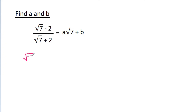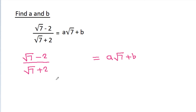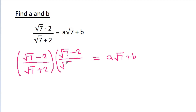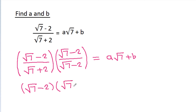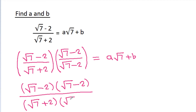So, we have (√7 - 2) / (√7 - 2), which is equal to a times (√7) minus b. We multiply the numerator and denominator by (√7 - 2) to get (√7 - 2) times (√7 - 2) / (√7 - 2), which is equal to a times (√7) minus b.